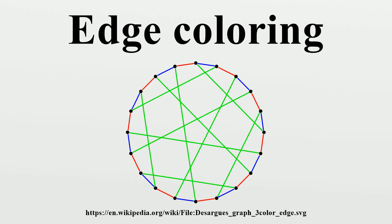In graph theory, an edge coloring of a graph is an assignment of colors to the edges of the graph so that no two adjacent edges have the same color.